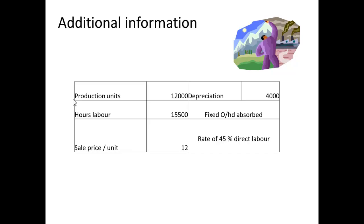You need a little bit of additional information: the method of absorption, which is 45% of direct labour for fixed overhead. You also need to know the hours of labour, depreciation, how many units there were, and what the sale price was.